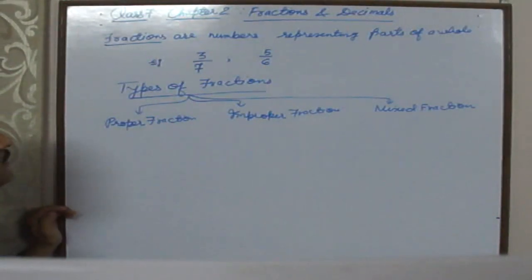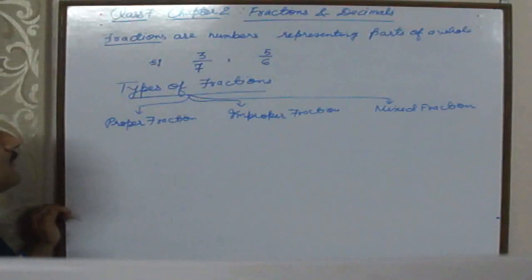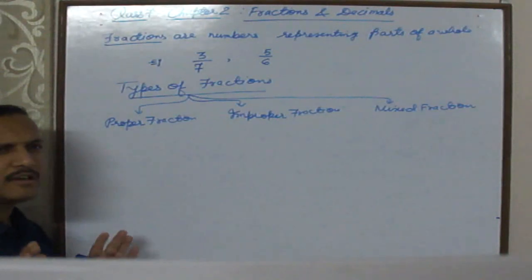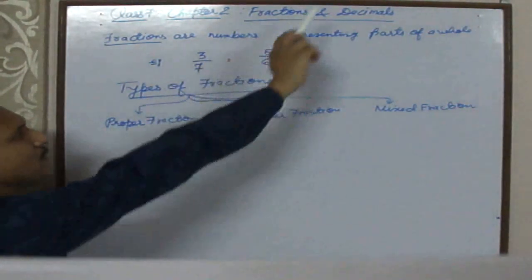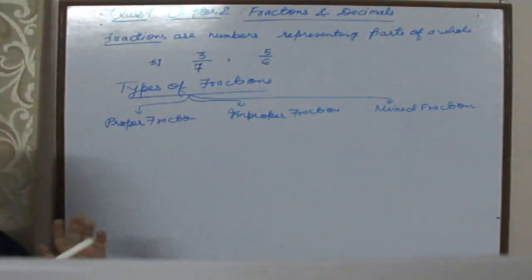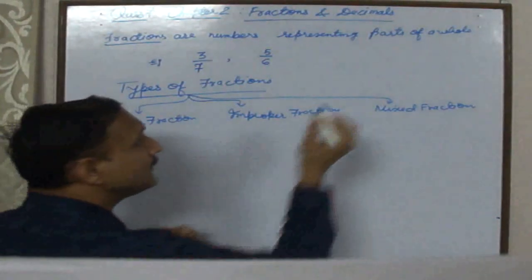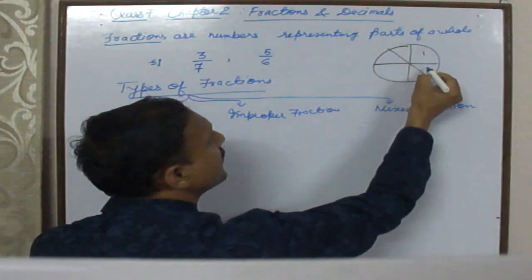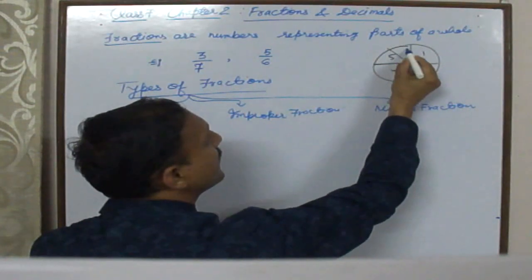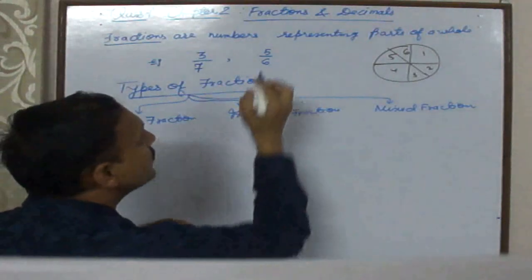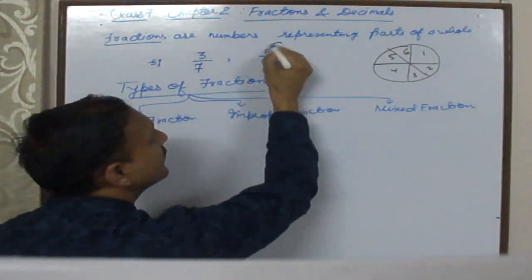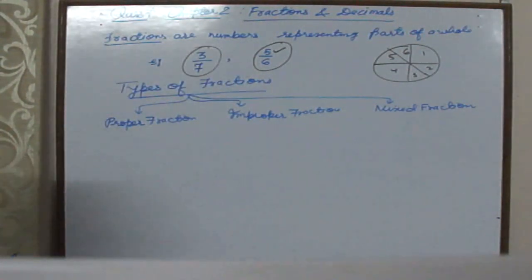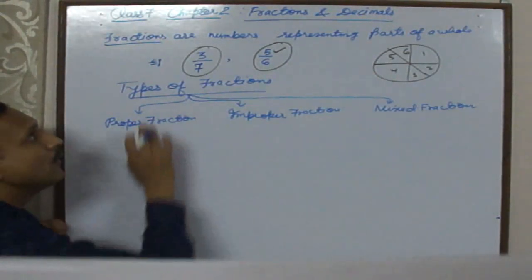Today we are going to start Chapter 2: Fractions and Decimals, Class 7. You have already studied fractions in previous classes, so let us recap. Fractions are numbers representing parts of a whole. For example, if a whole is divided into 6 parts and 5 parts are taken, the fraction is 5 by 6. Another fraction is 3 by 7.